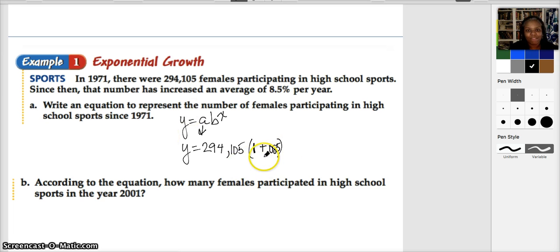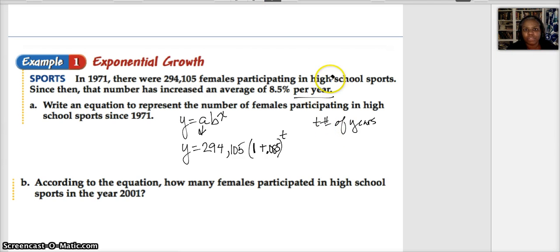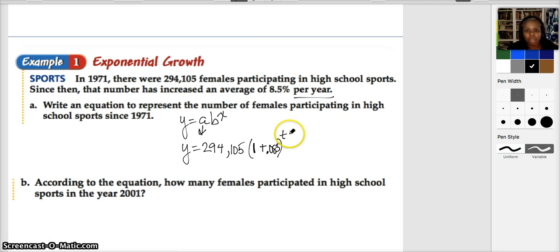I take that value and then since this increase is happening annually, this value has to represent the number of years past 1971. I can just say T where T is the number of years greater than 1971, or I could write it where T is the year minus 1971. So if I put 1981 in here, it would be 10 years and it would show like every 10 years that increase would happen. And so, this is the equation: Y equals 294,105 times 1.085. Notice what I did, I just added that together to the T minus 1971 power.